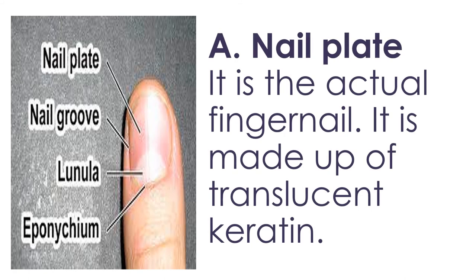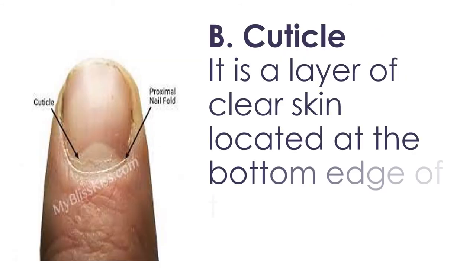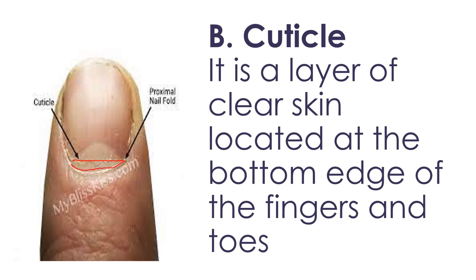The nail plate is the actual fingernail. It is made up of translucent keratin. The lunula is the white portion of the nail. The cuticle is a layer of clear skin located at the bottom edge of the fingers and toes. It protects the nail area from bacteria.